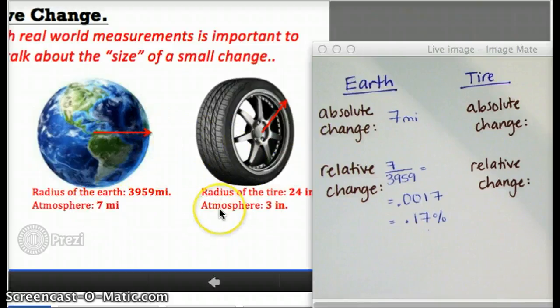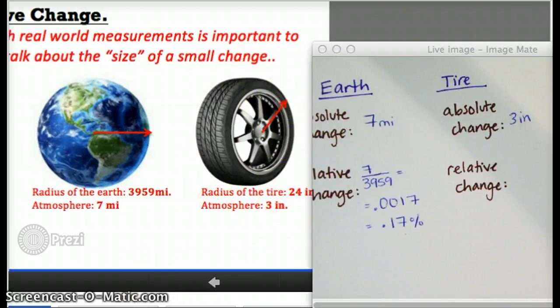The radius of the tire, on the other hand, the absolute change is three inches. That's how much additional length that the tire adds onto the radius, which doesn't seem like very much.